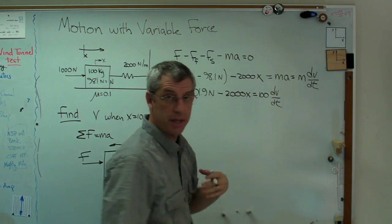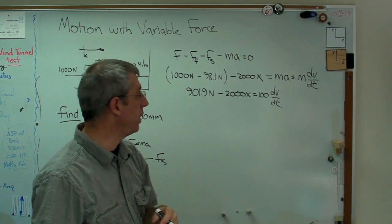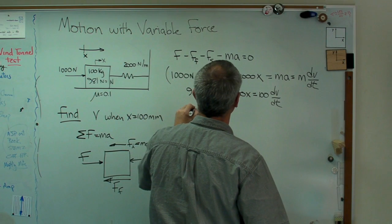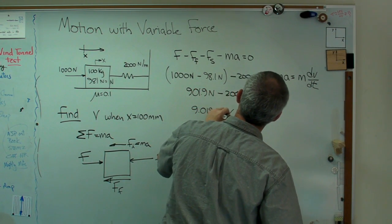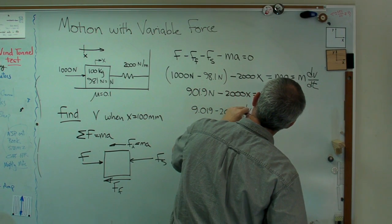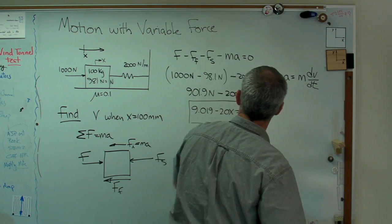dv/dt is acceleration. Acceleration is change in velocity divided by change in time. And if I want to clean this up a little bit, I guess I'll divide through and go 9.019 minus 20x equals dv/dt. That's a pretty useful expression.